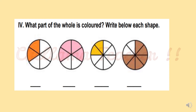Part 4: What part of the whole is colored? Write below each shape. First, we count the total parts — 1, 2, 3, 4, 5, 6. So in the denominator, 6 parts are there. How many are shaded? 1 and 2. So 2 goes in the numerator — the fraction is 2 by 6.